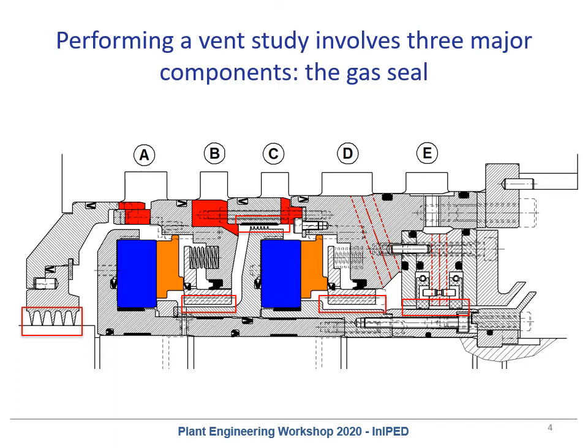The next big restriction is the porting within the dry gas seal. These are the various ports that connect back out to the compressor annulus and to the system. They can take the form of slots or holes. Slots generally give a larger area and create less restriction, while holes can be a little tighter. You need to understand the geometry of those features individually to incorporate them into your model.